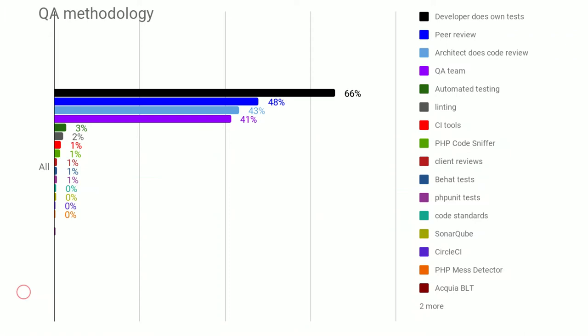Other QA tools mentioned: PHPUnit tests, code standards, SonarQube, CircleCI, PHP Mess Detector, BLT, Wraith tests, and at the end of the long tail: luck, wing, and prayer. Quotes include "dumb luck," "just wing it," "let's do it live," and "ship it if it works." It compiles — ship it.